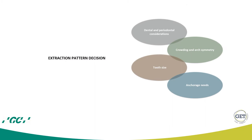Whenever you want to extract, the first thing you have to decide is the pattern of extraction — which teeth to extract. To do this, number one, you have to consider dental and periodontal considerations. If there are teeth that have deep carious lesions, are fractured, or have a significant periodontal defect, those teeth are the first candidates for extraction, even if that would not particularly fit your biomechanics best.